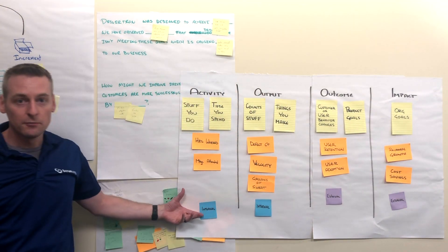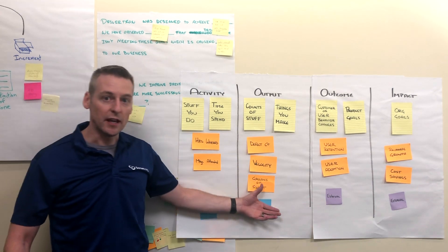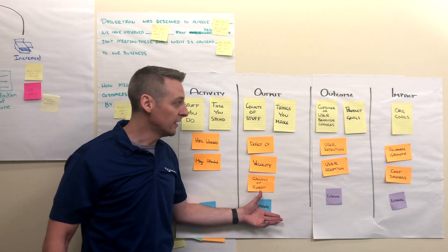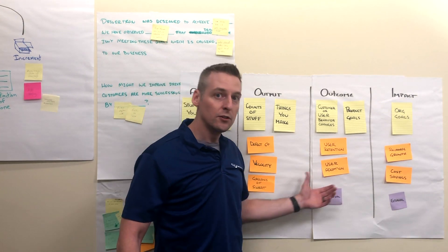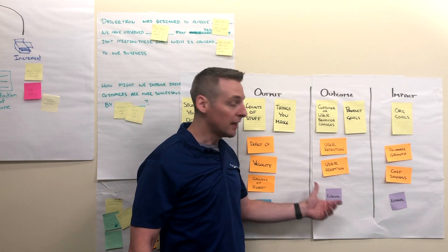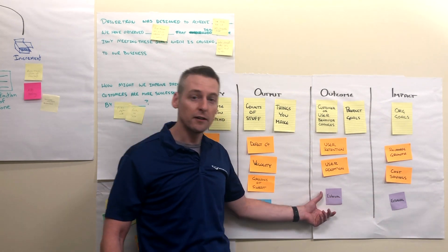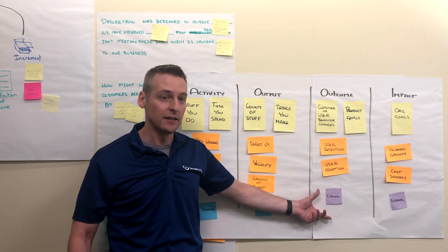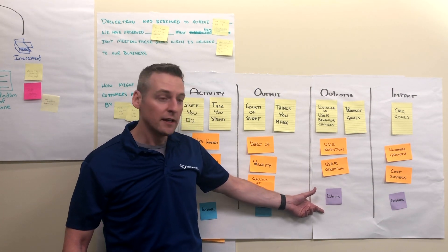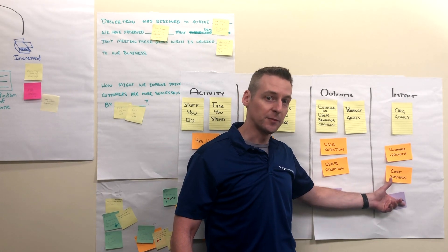In other words: last sprint, we spent 300 hours to build these eight PBIs. Because we created these eight product backlog items, we created a new checkout workflow in our CMS system. In that new workflow, we reduced cart abandonment rate by 7%. Because we changed that user behavior, it had an organizational impact of raising our revenue by 6%.